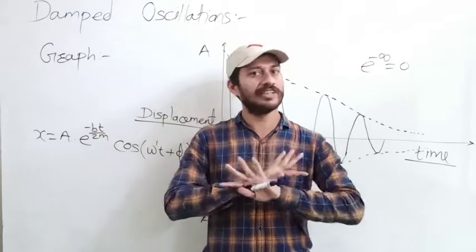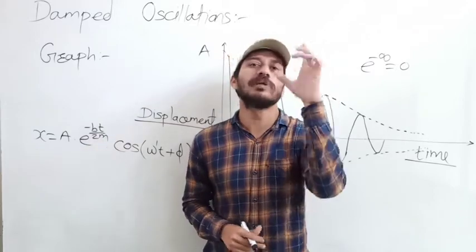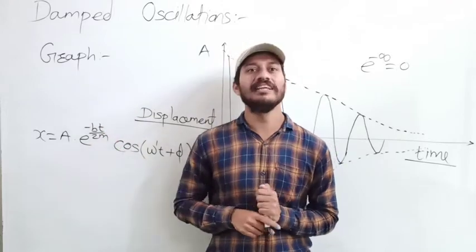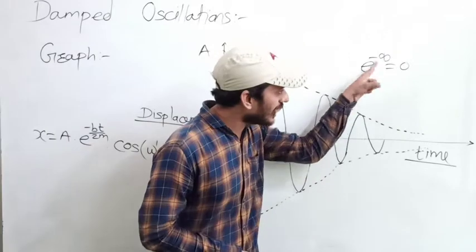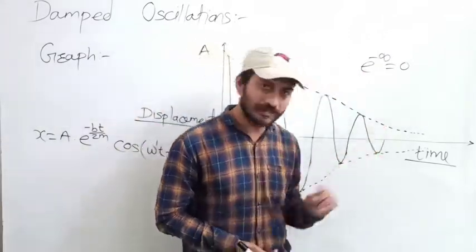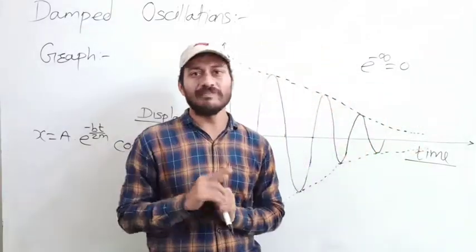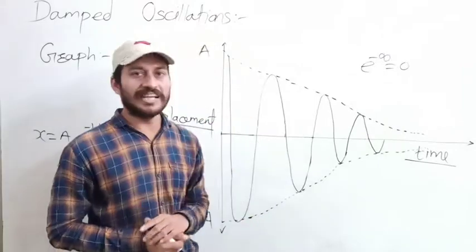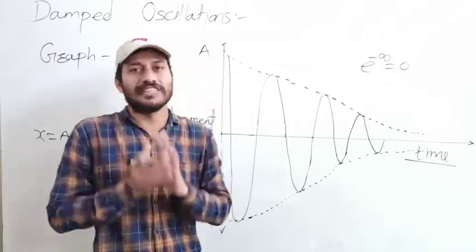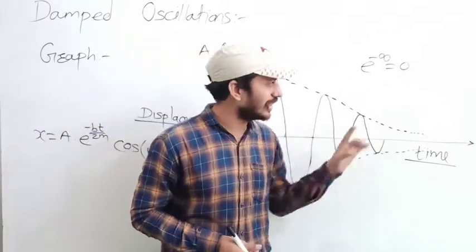B is the damping constant, 2 is already a constant, and m is the mass of the block. If time T approaches infinity, the exponent goes to minus infinity. When time is infinity, the amplitude becomes zero. If amplitude is zero, it means the displacement will undergo exponential and sudden decrease to zero, which occurs at infinite time.